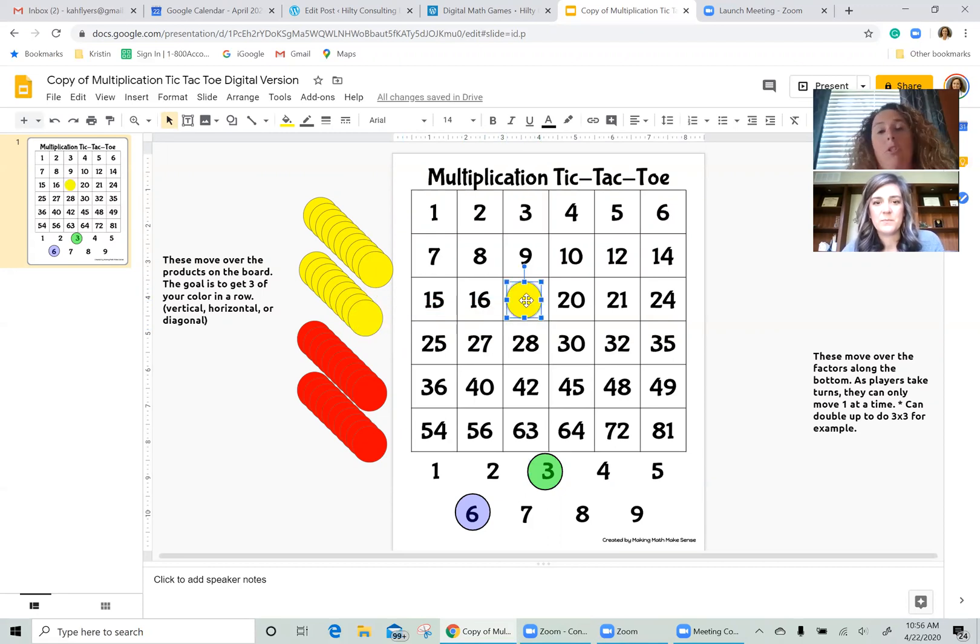The object of this game is just like tic-tac-toe. You're trying to get three in a row, either horizontally, vertically, or diagonally before your partner. But instead of placing x's and o's, you are going to be placing your chips over top of your products. So my first chip went right here on 18.